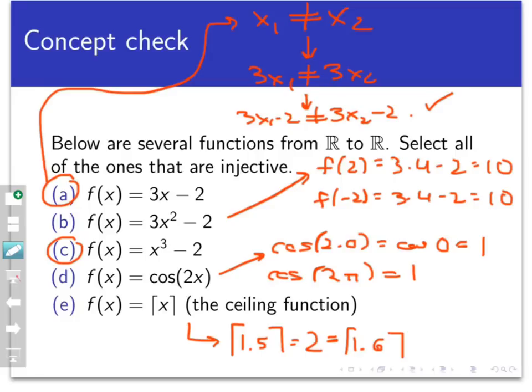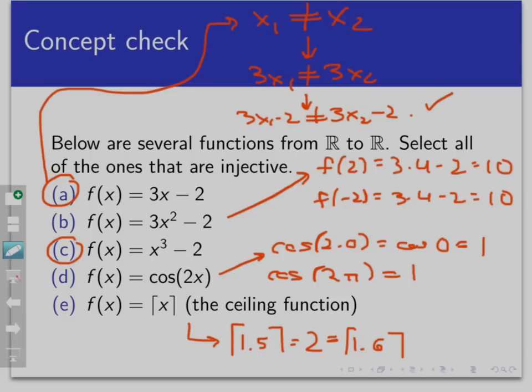So notice that to prove a function is not injective requires only a single example of a collision. But to prove a function is injective requires a proof because we have to establish the truth of a universally quantified statement that appears in the definition. The above reasoning is one way to do this, but in the next video we're going to explore some other strategies for proving that functions are injective. So thanks for watching and stay tuned.